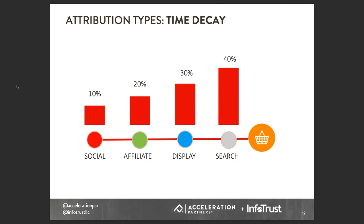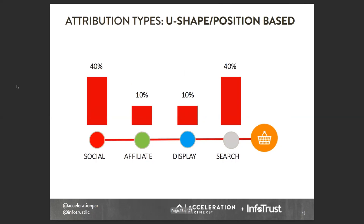Then there's the time decay model. Time decay gives credit to all channels that get touched, but more to the closers — what finalized the customer's reason to make that purchase. And then you have U-shaped and position-based models, where you give more credit to the opener and the closer, while channels in between get less credit — but everybody gets a little bit.